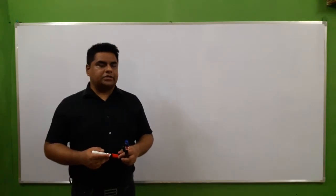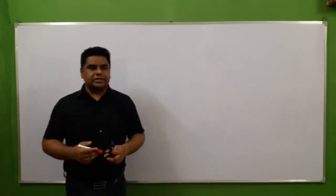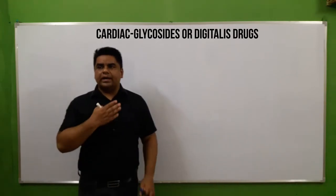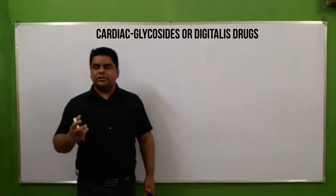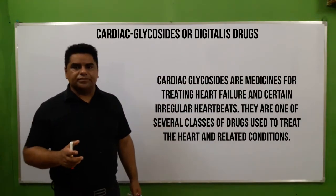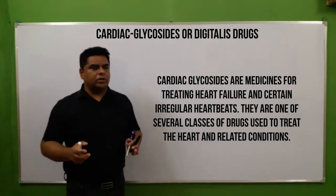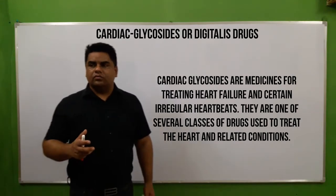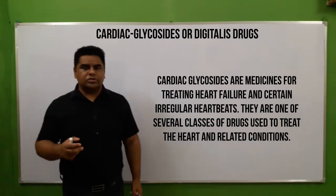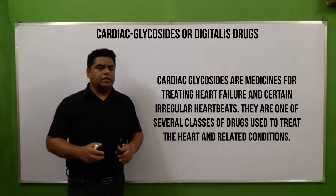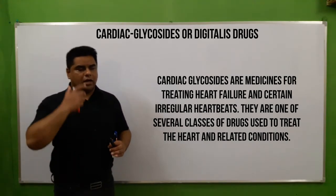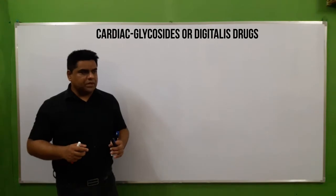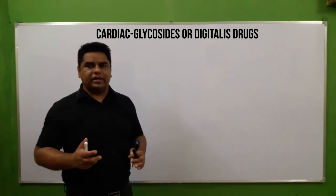In today's lecture, we are going to discuss and study about the cardiac glycosides. By definition, these are medicines commonly used for heart failure and irregular heartbeat. These drugs are a class used to treat heart and heart-related conditions, so basically heart failure and abnormal heartbeats are treated by cardiac glycosides.